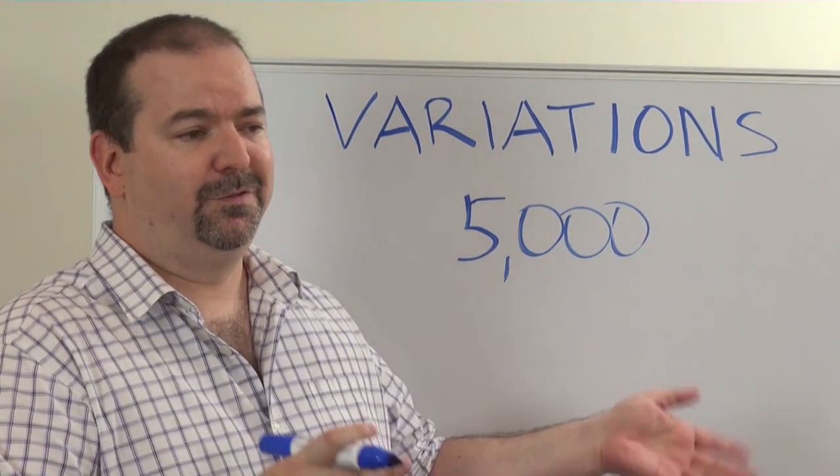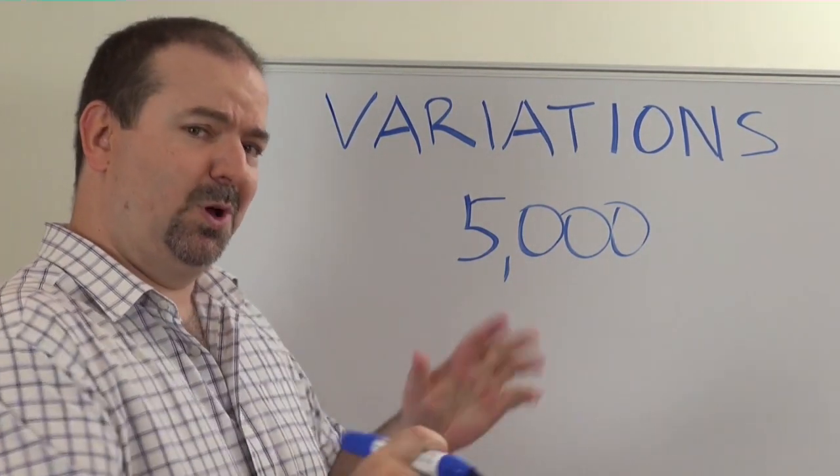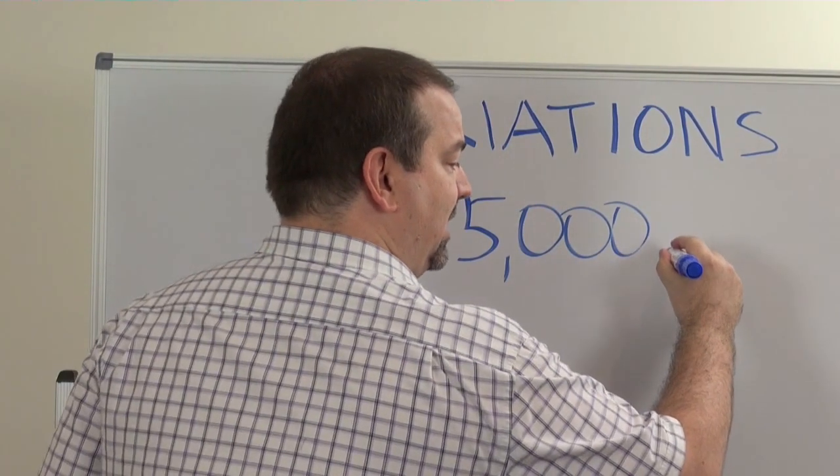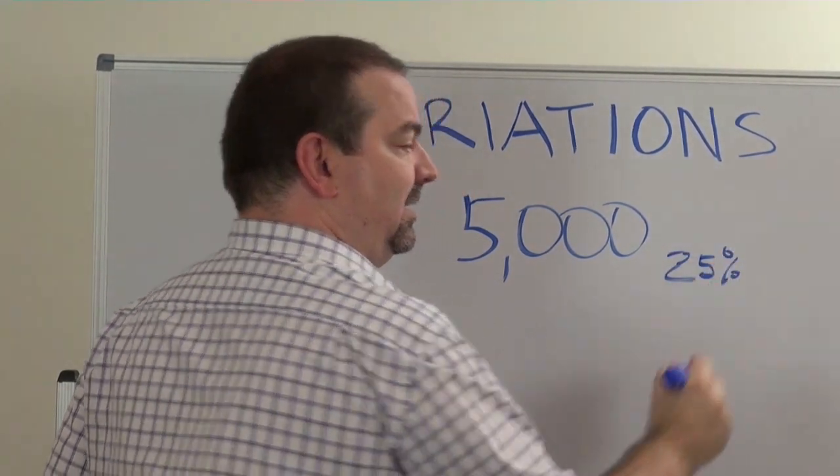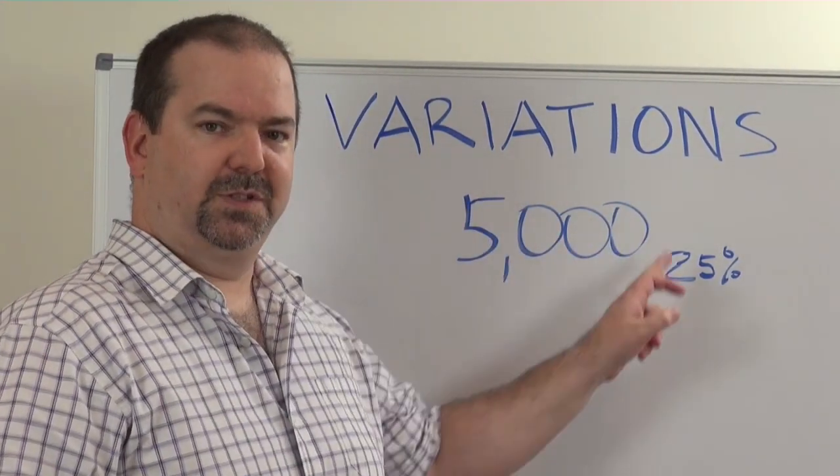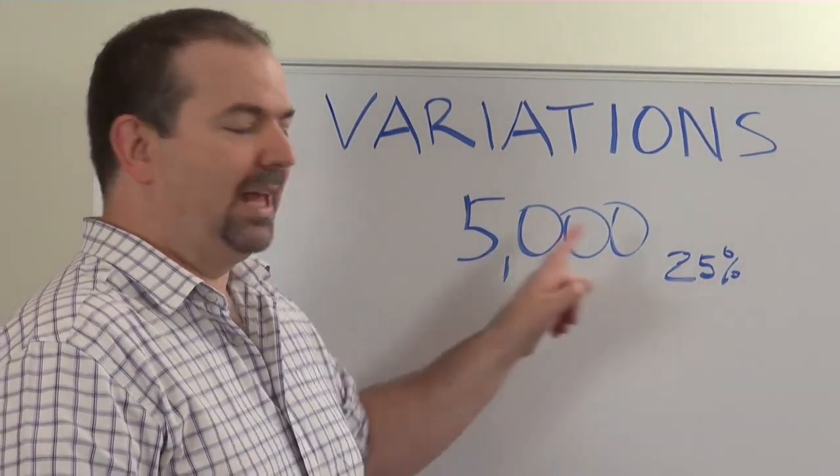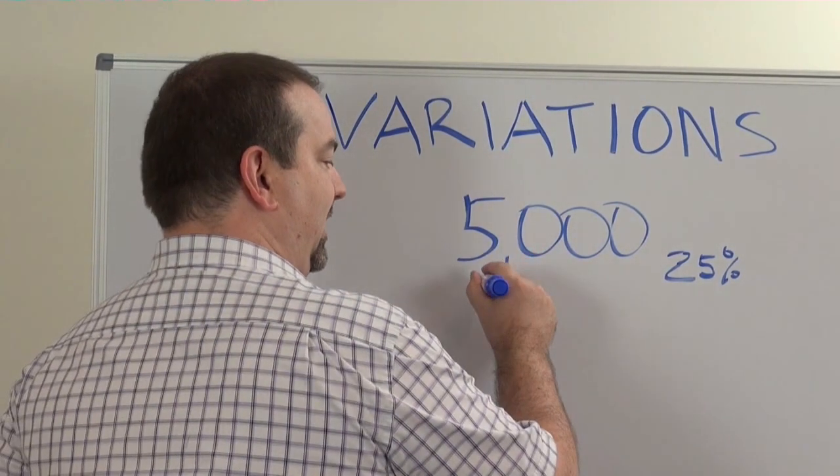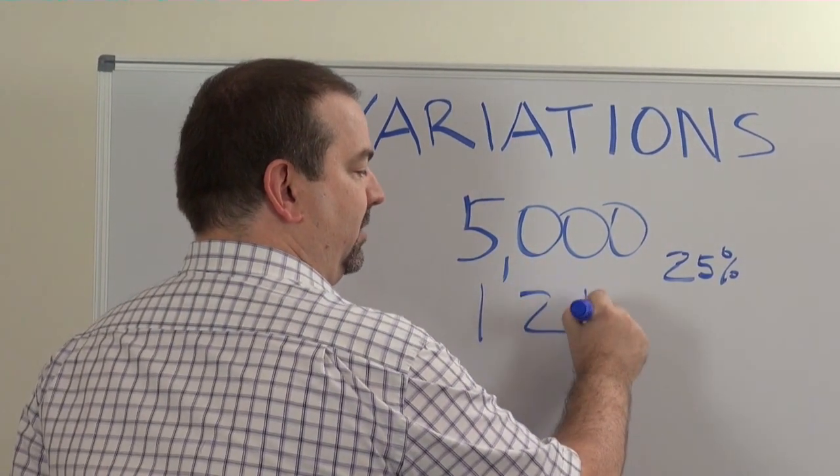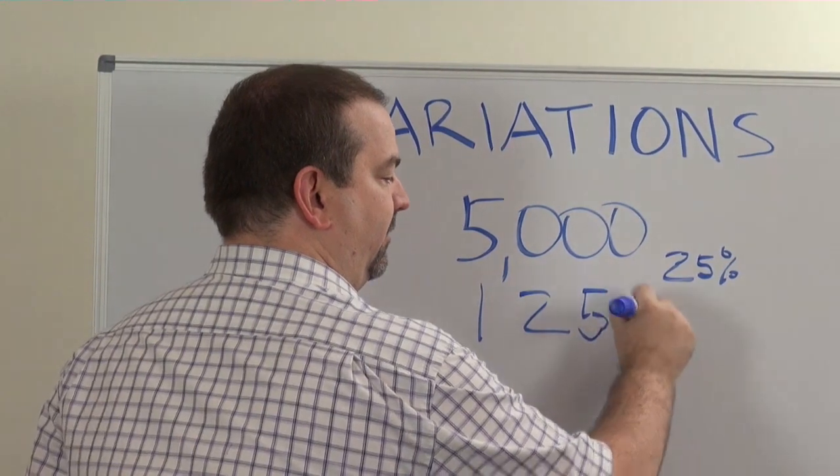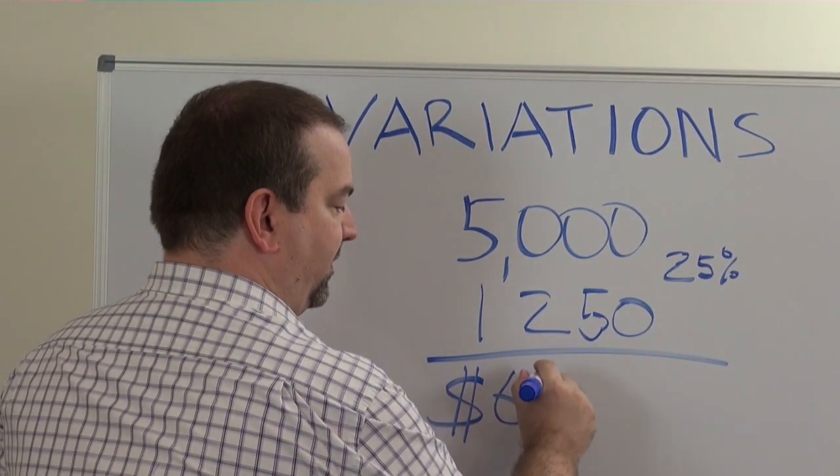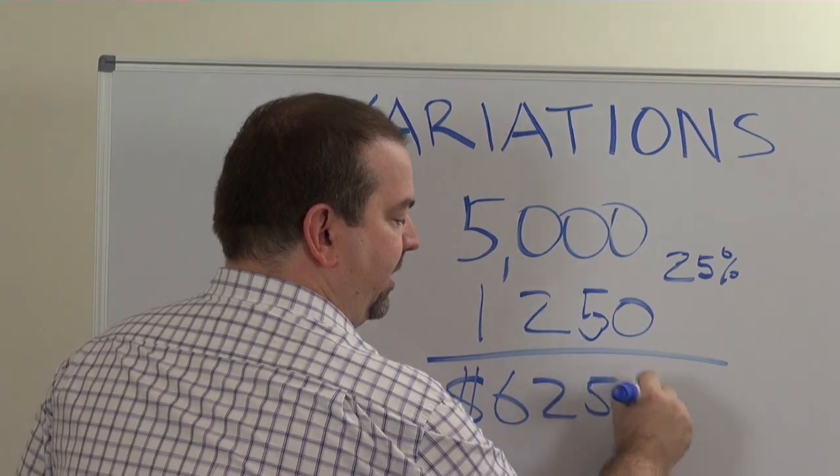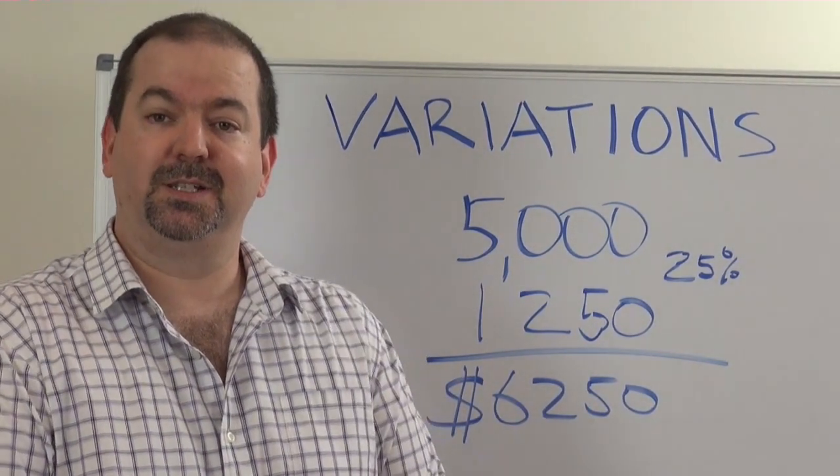Most builders charge anywhere between 15% to 40%, but most builders will charge a 25% margin on any cost value. So the builder's going to add his 25% margin to there which comes out to twelve hundred fifty dollars, which means you're going to pay the builder sixty two hundred fifty dollars for those upgrades for the appliances.